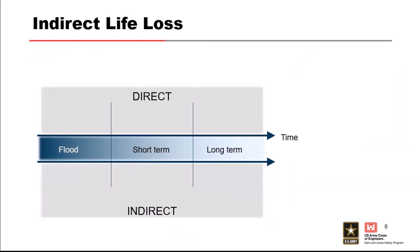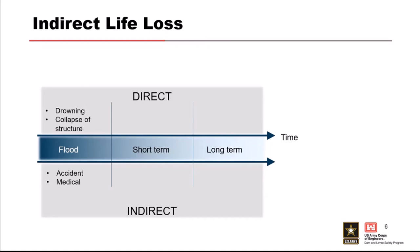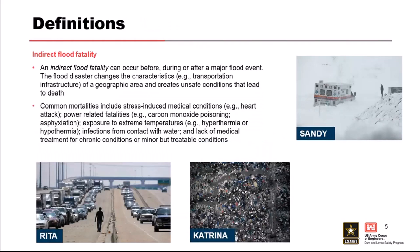Before, during, and after — and how far out are we really going to go. With direct, it's during the flood: drowning, collapse of structure. Indirect is some kind of accident or medical-related fatality that could occur during the event or for a short period after. When we say short term, we mean the first three months after a disaster — about 90 days. It could be that you interacted with water, got an infection like sepsis, and lost your life — we might call that direct. But if it was a couple months later and harder to link back, it gets more ambiguous.